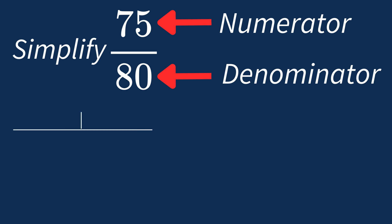First, let's list out the factors for each. For 75, the factors are 1, 3, 5, 15, 25, and 75.